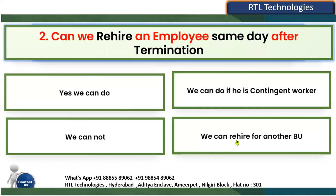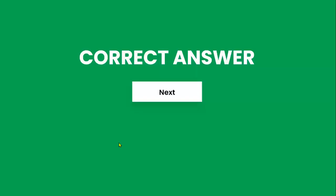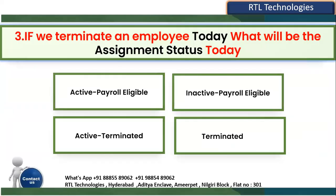Whether employee or contingent worker, it doesn't matter — the moment you terminate an employee, you must wait 24 hours. You can rehire that employee the next day or on a future date. You cannot rehire an employee on the same day. So the answer is: we cannot rehire an employee on the same day. Click next.